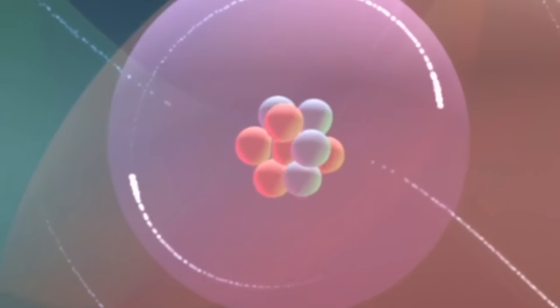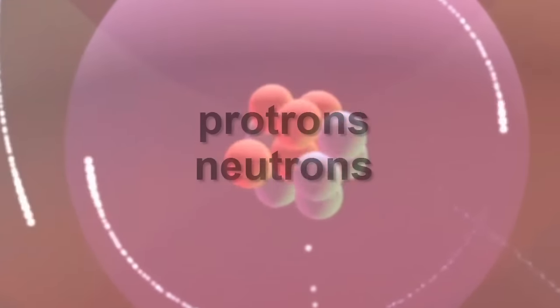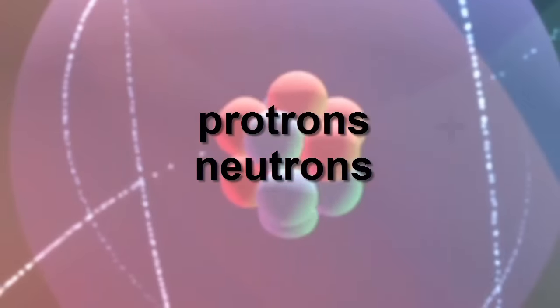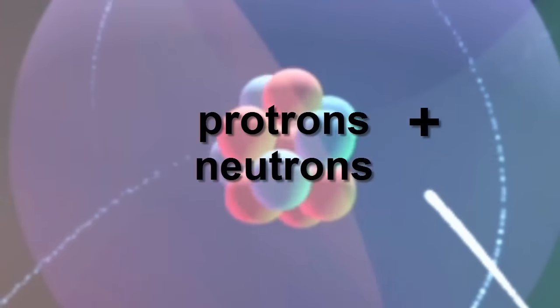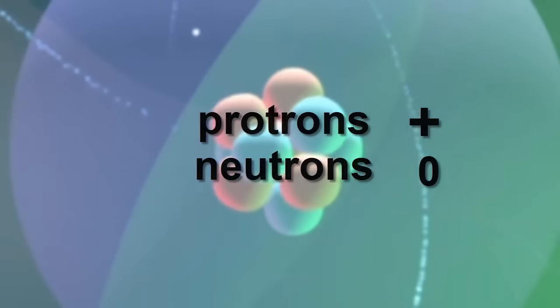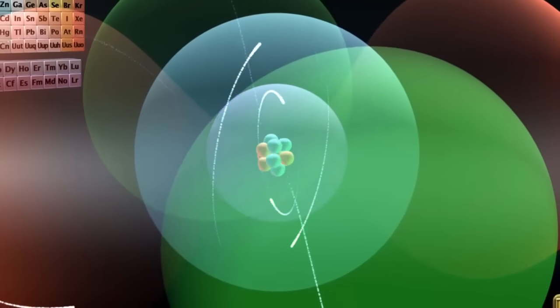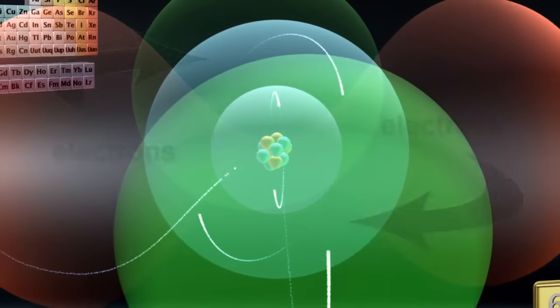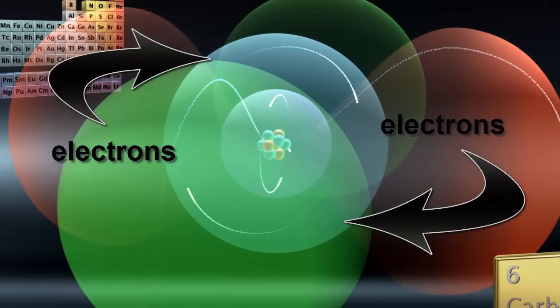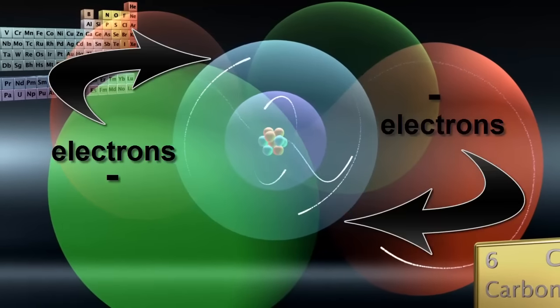We know that the heavy protons and neutrons live in the atom's center, called the nucleus. The proton carries a positive electric charge and the neutron is neutral. The light electrons whiz around the outside of the nucleus and trace out the shape of a fuzzy ball. They carry a negative electric charge.